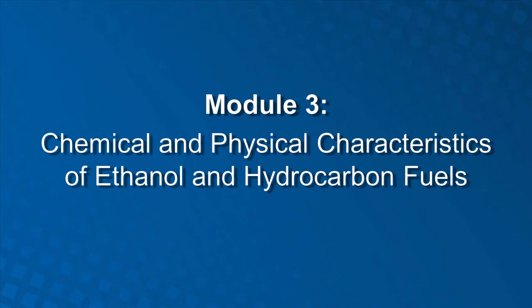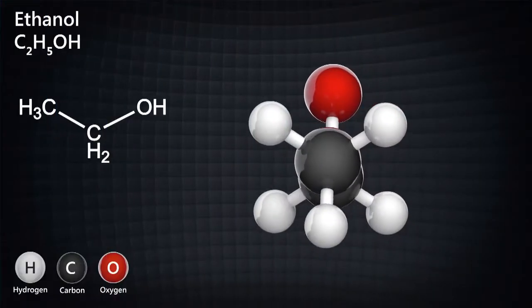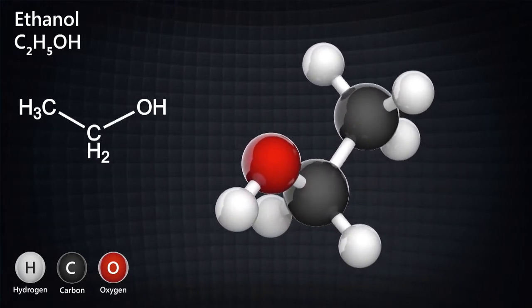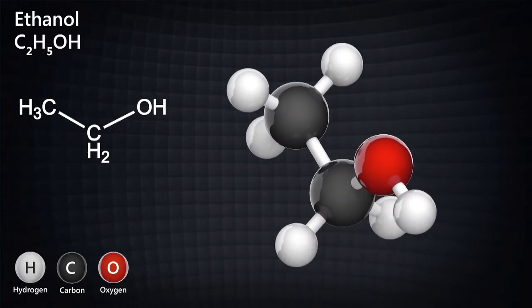Module 3 covers the chemical and physical characteristics of ethanol and hydrocarbon fuels. Upon completion of this module, participants should be able to describe the chemical and physical differences between gasoline, ethanol, and ethanol blended fuels. In order to understand the nature of ethanol blended fuels, emergency responders will need to understand the characteristics of polar solvents and hydrocarbons, their differences, and how these types of products interact.